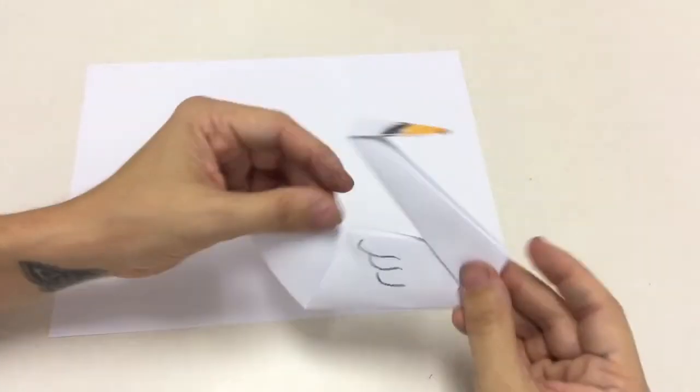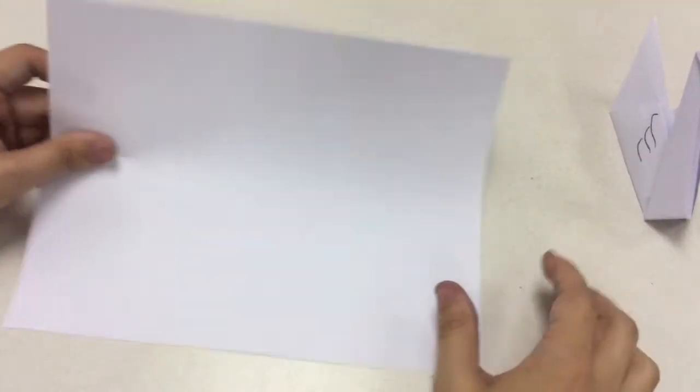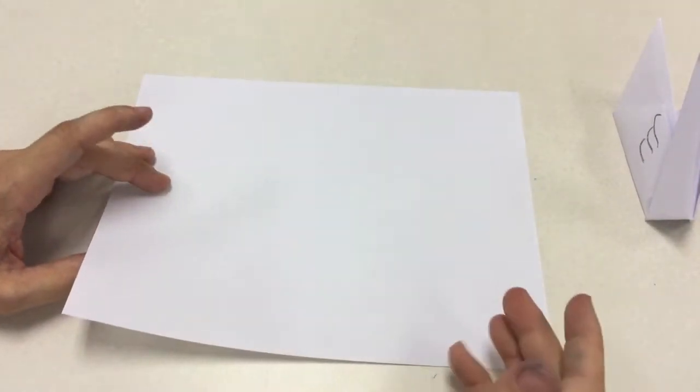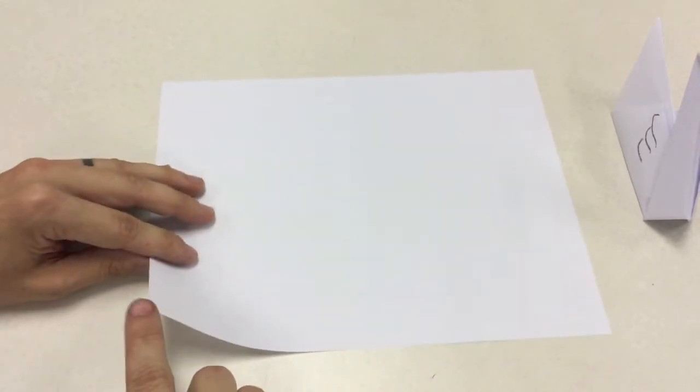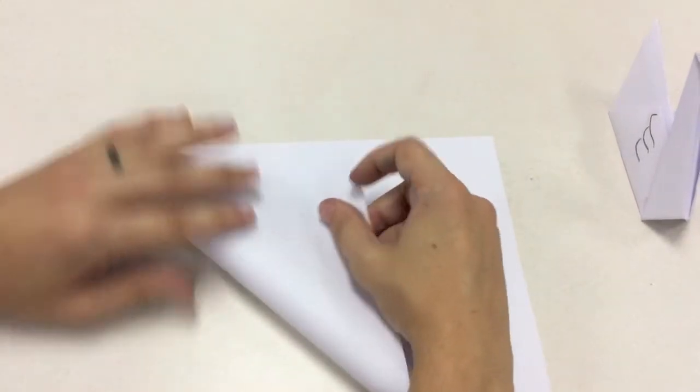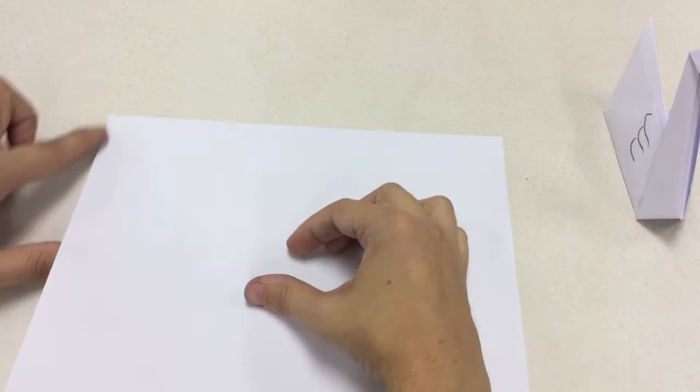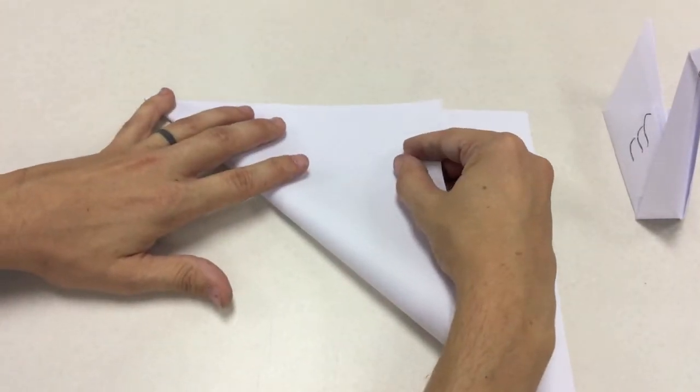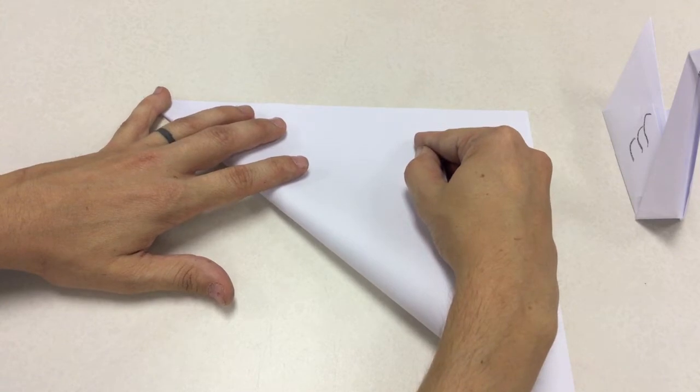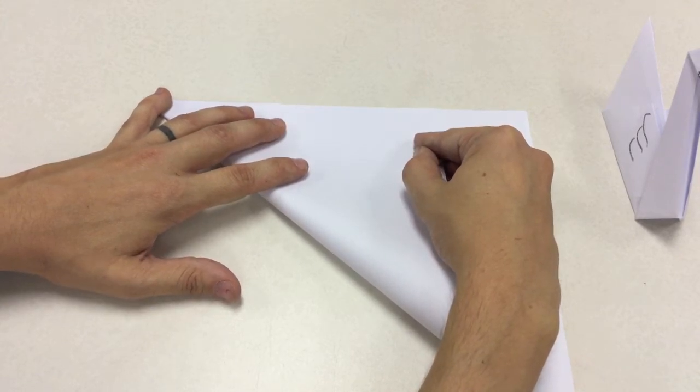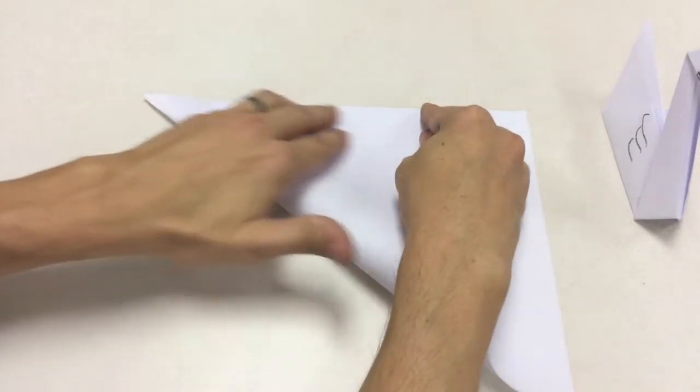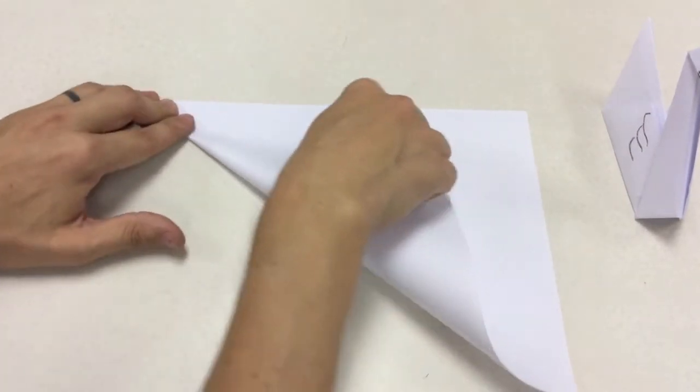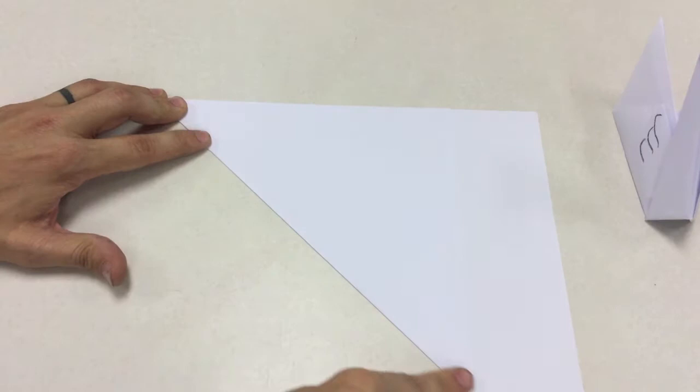To make our swan we're going to start with a piece of printer paper, and the first thing I need to do is get this into a square. The easiest way to do that is to take this corner right here and bring it all the way over so that this edge meets that edge. I fold it all the way up and line it up. One of the most important things about origami is craftsmanship. That means I want this lined up as close as I can. Once I got it I'm going to crease it, which means I fold the paper to create a fold.